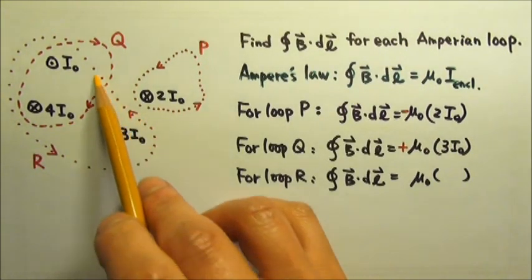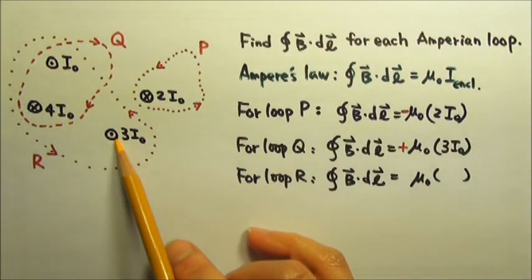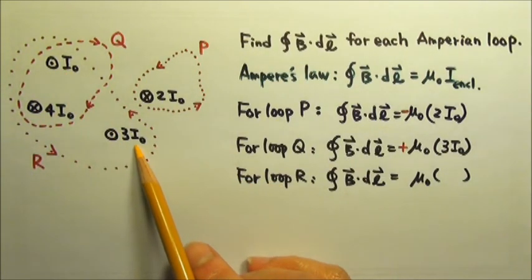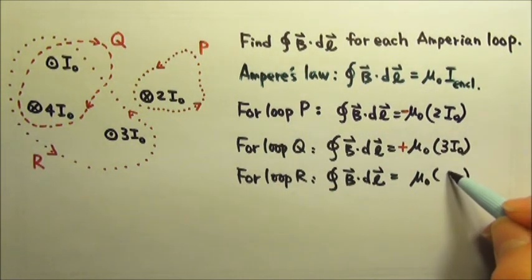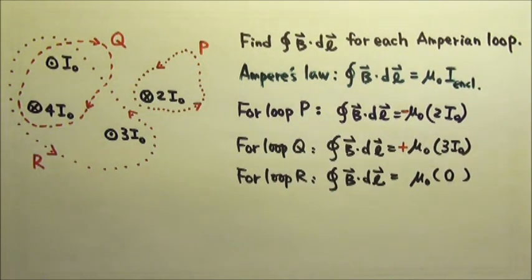For loop R, there are three currents inside: 4I₀ coming out of the paper and 4I₀ going into the paper. So the net enclosed current is zero.